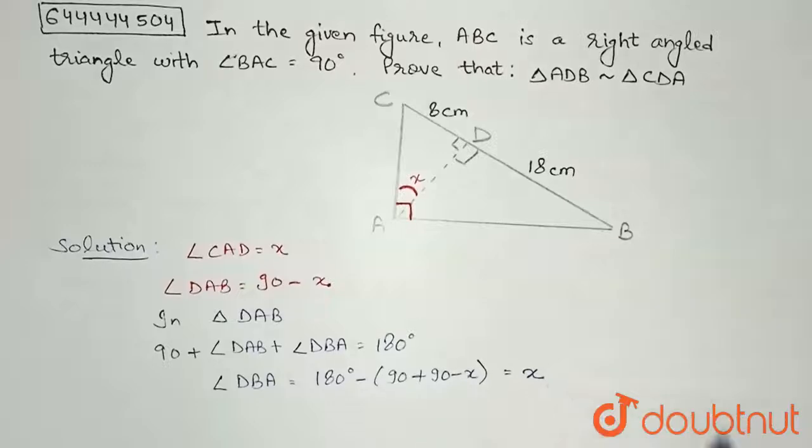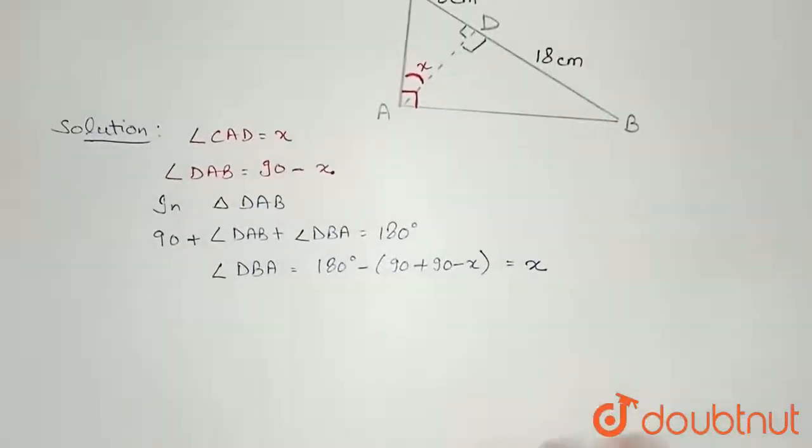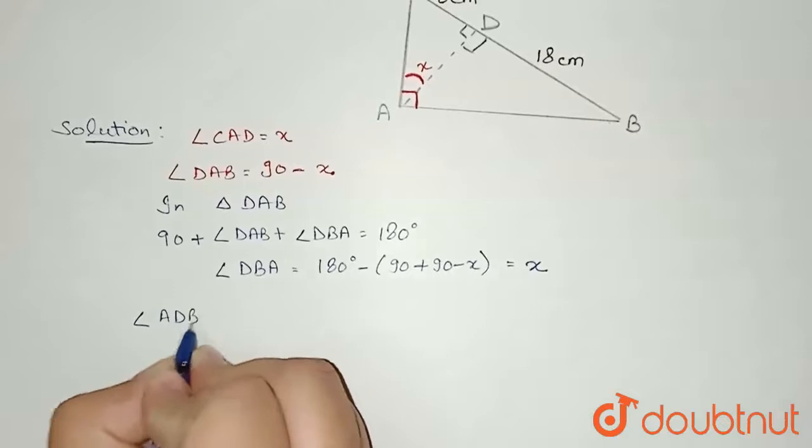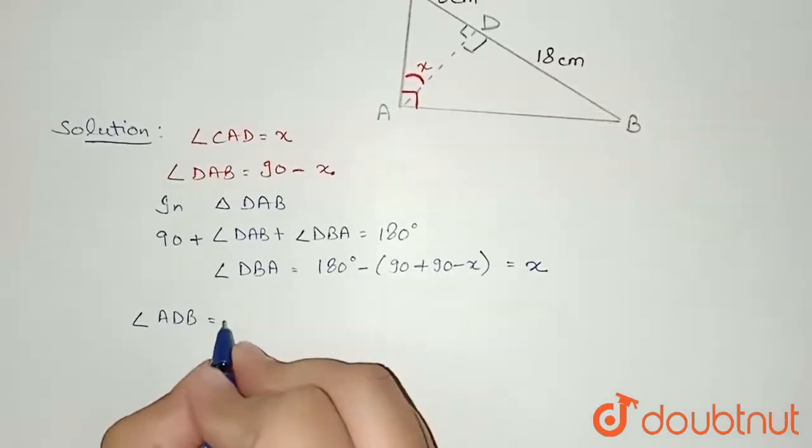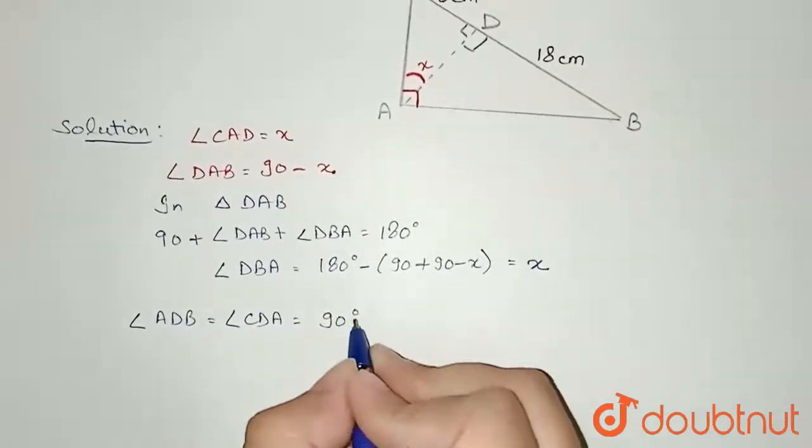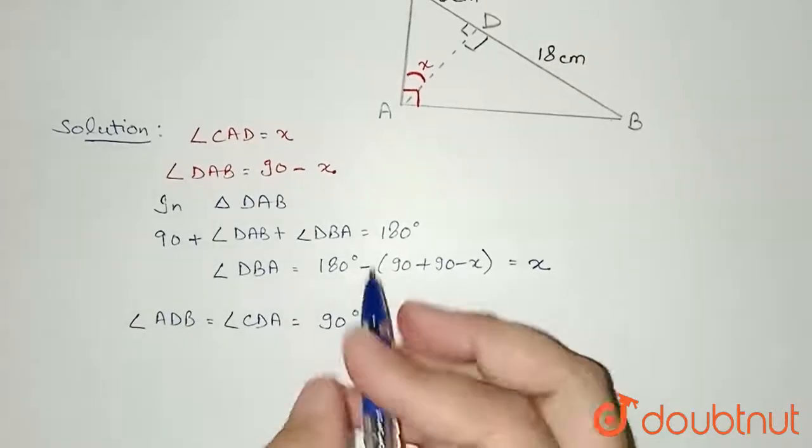Now what we can write is that angle DBA, which we can write as angle ABD also, equals angle CAD. We can also note that angle ADB equals angle CDA, which is given to us as 90 degrees.